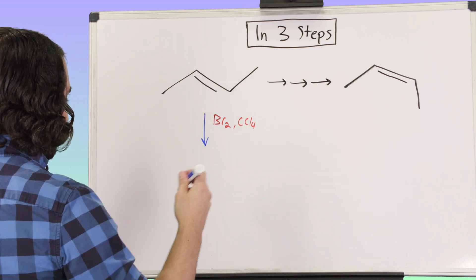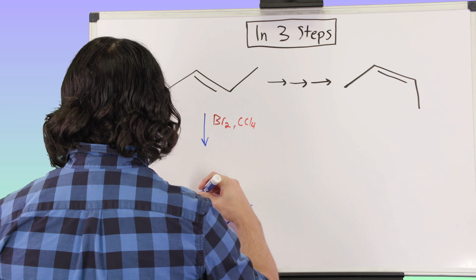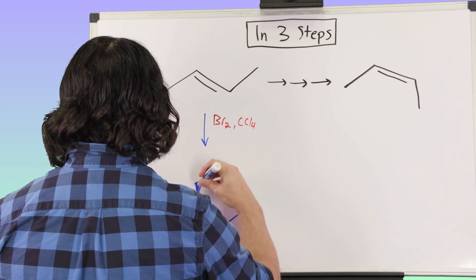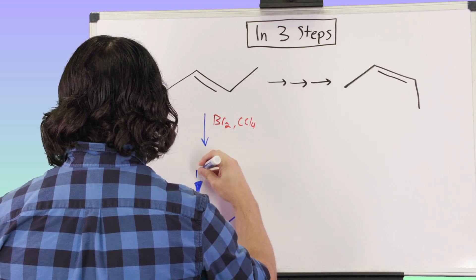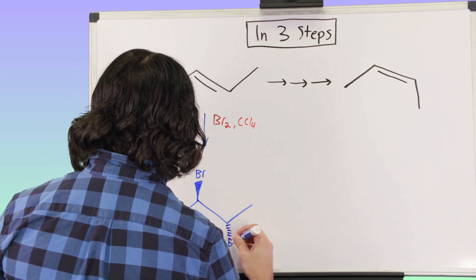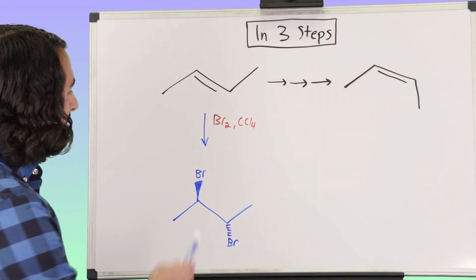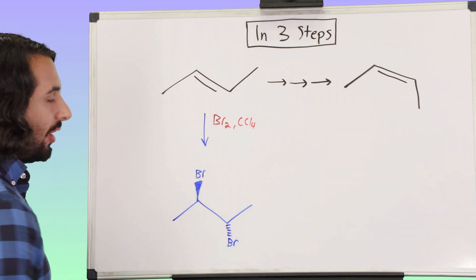Well, we would get a dibromo product. So we know that we can do dihalogenation and we're going to get to there. Why is that useful?